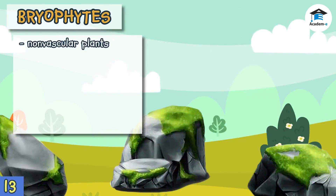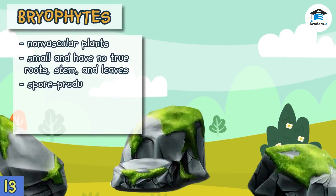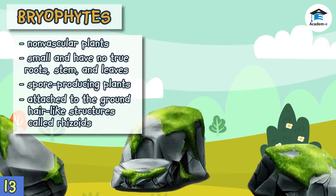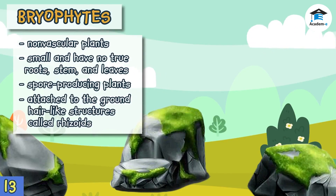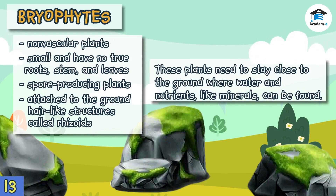Bryophytes are considered non-vascular plants. They are small and have no true roots, stem, or leaves. These spore-producing plants attach themselves to the ground not by roots but by hair-like structures called rhizoids to keep the plant in place. With an underdeveloped vascular system, these plants need to stay close to the ground where water and nutrients like minerals can be found.